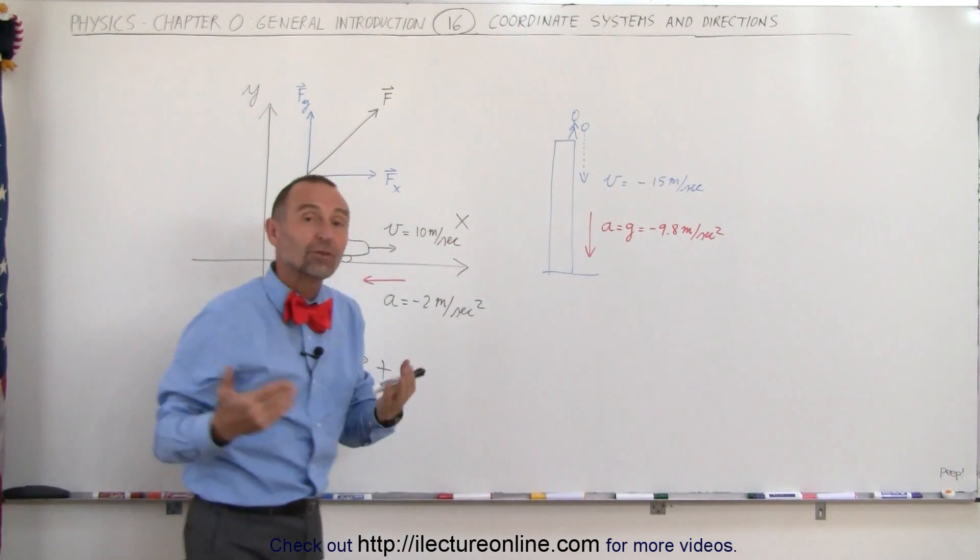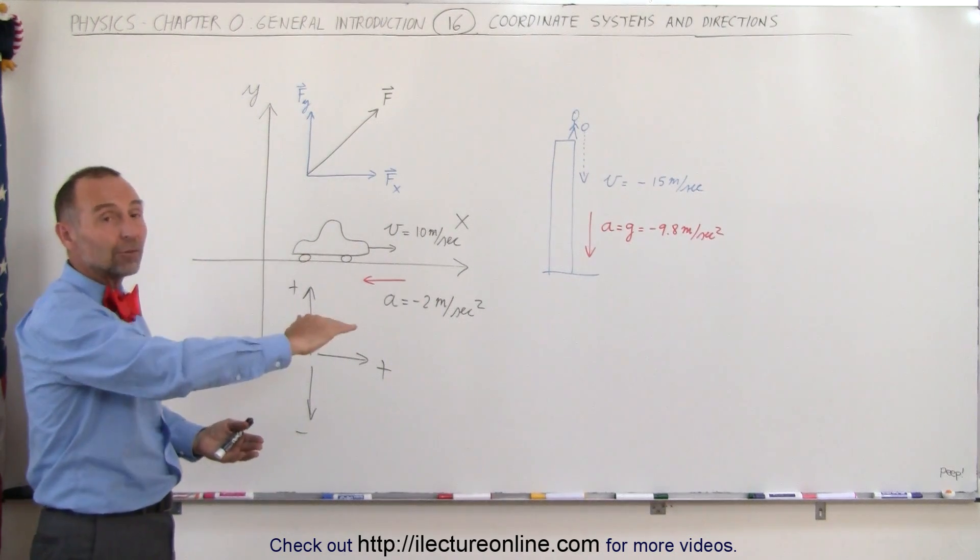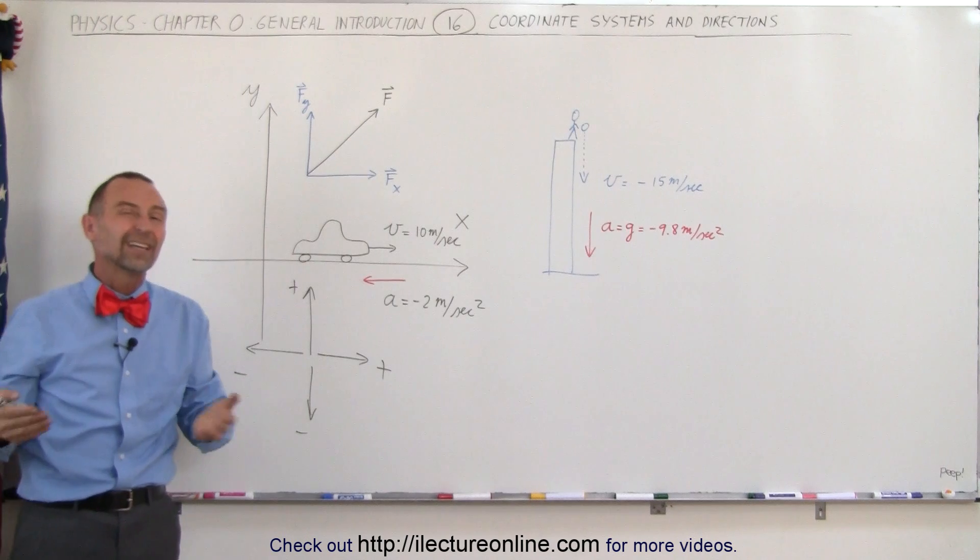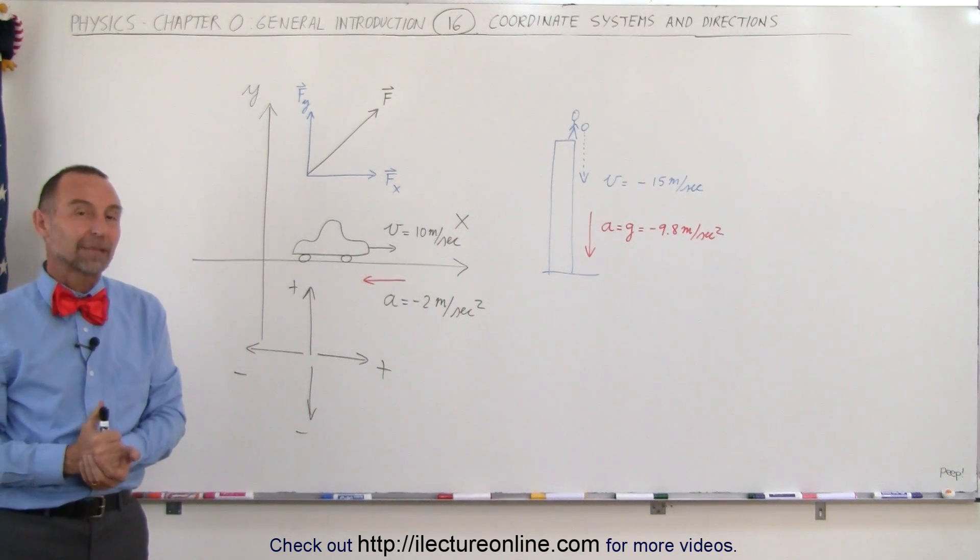So the general rule is, with directions, down is negative, to the left is negative, to the right is positive, and up is positive. And that is usually the case for most of everything we're going to see in physics. And that's how it's done.